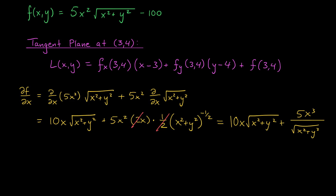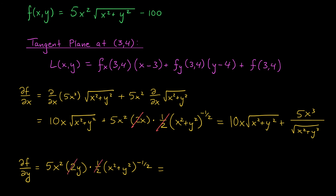The partial derivative with respect to Y is actually a little bit easier — we don't need the product rule, just the chain rule. Differentiating with respect to Y: ∂F/∂Y equals 5X² (left alone), times the derivative of the inside which is 2Y, times the derivative of the outside which is one half times (X²+Y²) to the power of negative one half. Just like before, we simplify by canceling the twos, leaving us with 5X²Y divided by √(X²+Y²).